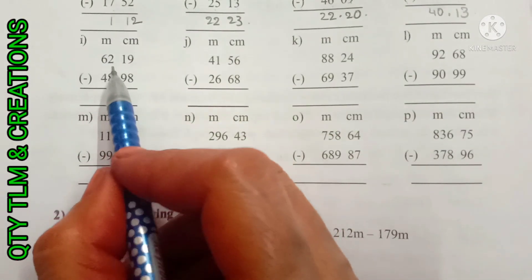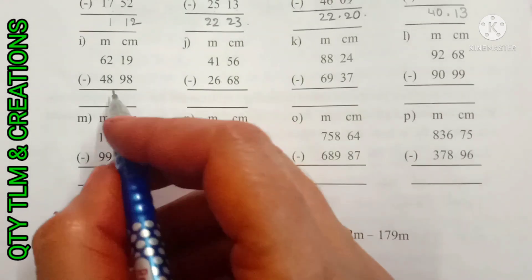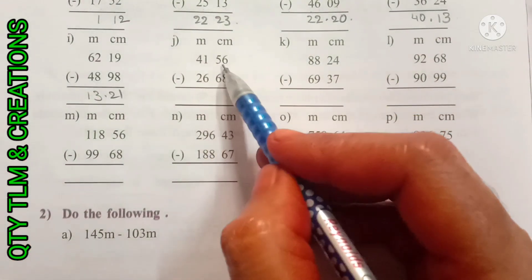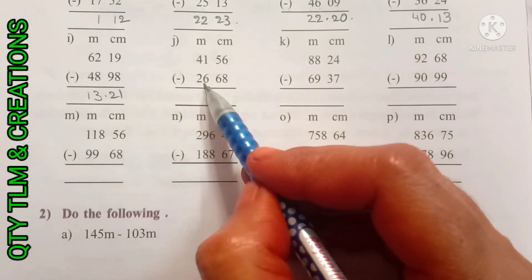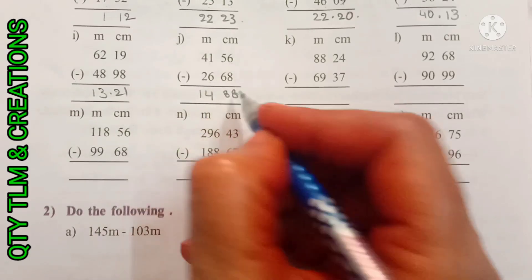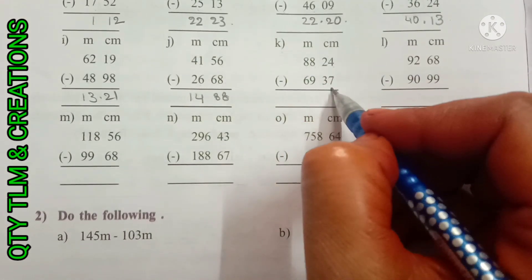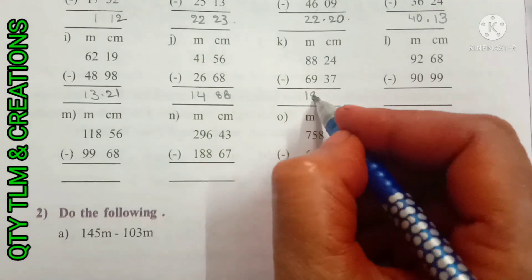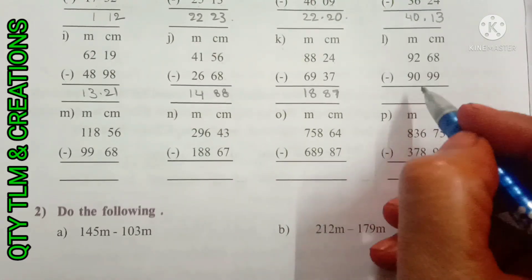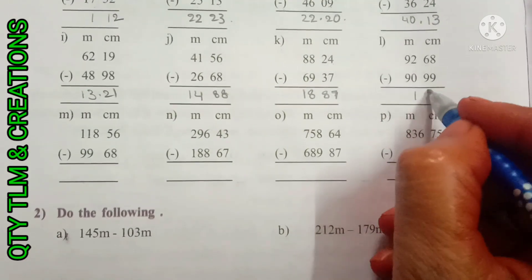Next I) 62m 19cm minus 48m 98cm, we get 13m 21cm. Next J) 41m 56cm minus 26m 68cm, we get 14m 88cm. Next K) 88m 24cm minus 69m 37cm, we get 18m 87cm. Next L) 92m 68cm minus 90m 99cm, we get 1m 69cm.